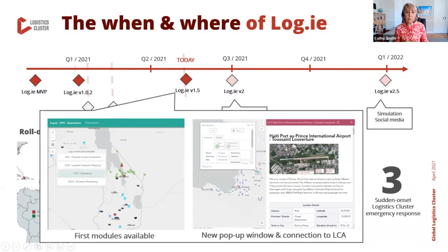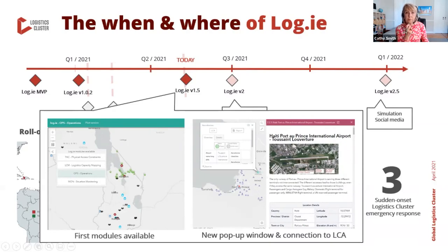Main updates of this release: we improved the user experience by creating modules of information — for example, for physical access constraints or logistics capacity mapping — so you can find what you're looking for more easily by selecting the relevant module. We created new pop-up windows that help you read information more easily and highlight the most relevant details. Also, with just one click you get additional LCA information on the element you're interested in — for example, clicking the LCA button gives you the full information of that airport.